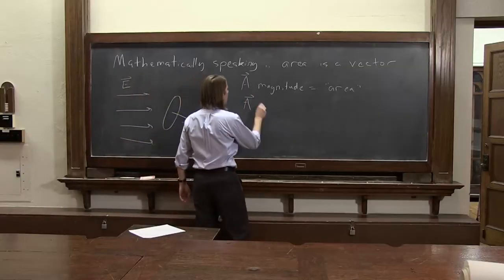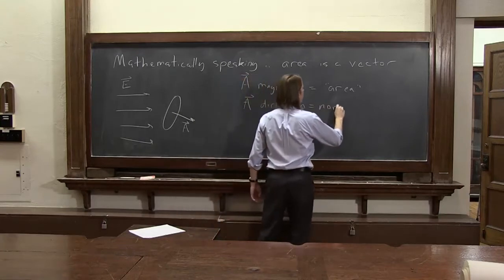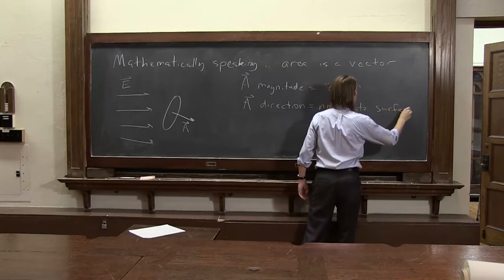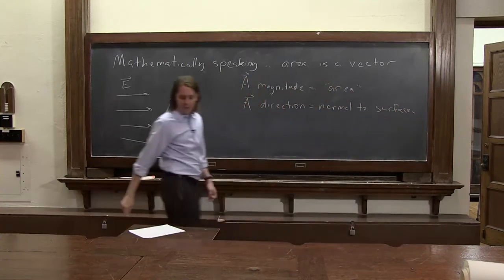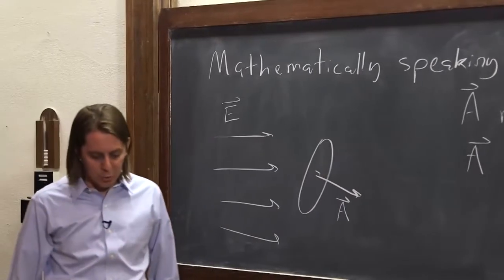The area vector direction is normal to the surface. So that's how I drew it here. You can see I drew the vector normal to the surface.